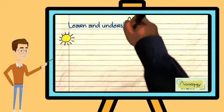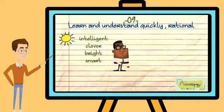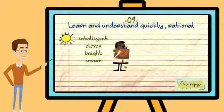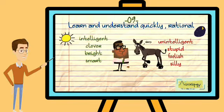Those who learn and understand things quickly, rational people, are intelligent, clever, bright and smart. And those who don't are unintelligent, stupid or foolish and silly. But foolish and silly are not so strong in meaning as unintelligent and stupid.